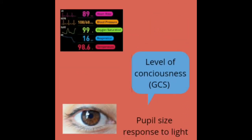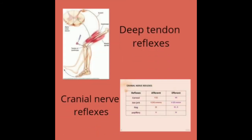To assess a patient, we check vital signs — blood pressure, heart rate, and oxygen saturation. We also need to assess their level of consciousness using the Glasgow Coma Scale. Then we check pupil size and response to light, followed by deep tendon reflexes and cranial nerve reflexes such as corneal reflexes and jaw jerk.